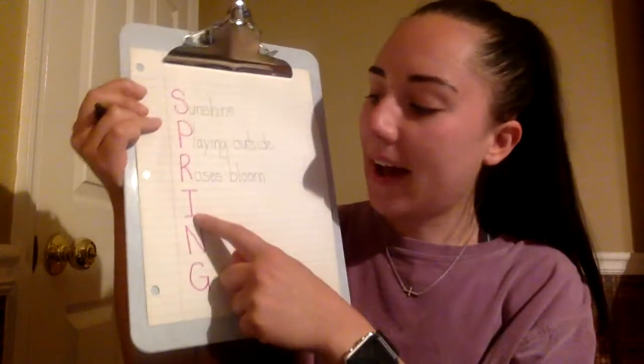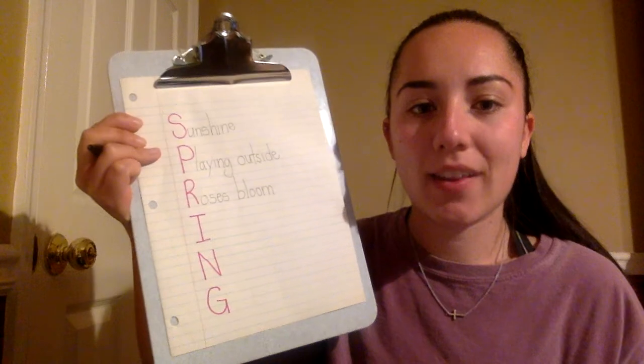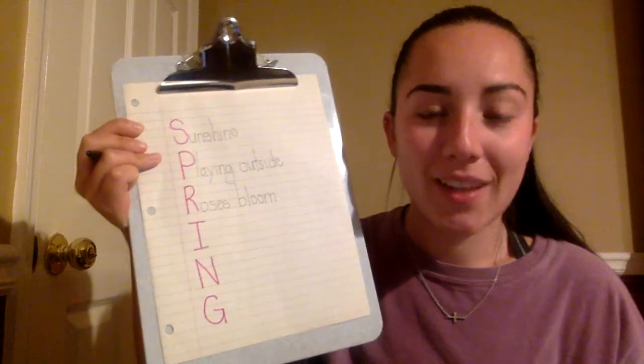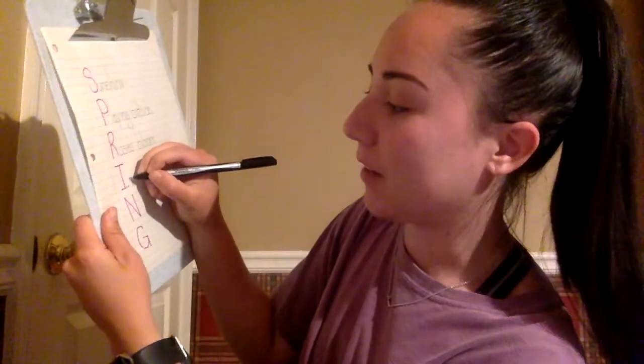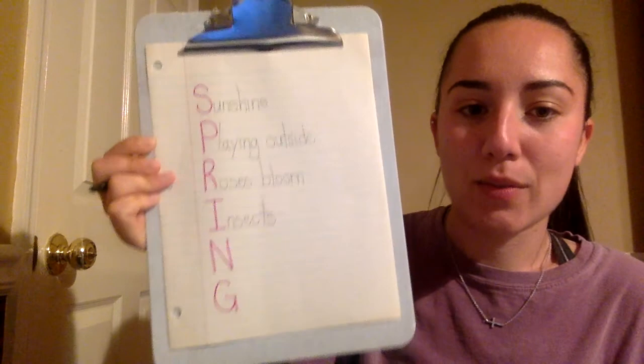So that word roses starts with an R and roses bloom in springtime. Next letter I have is an I. What is something with I that is common during springtime? These I don't like too much — insects. I chose insects because lots of bugs start to come out in the springtime. Insects was my word.